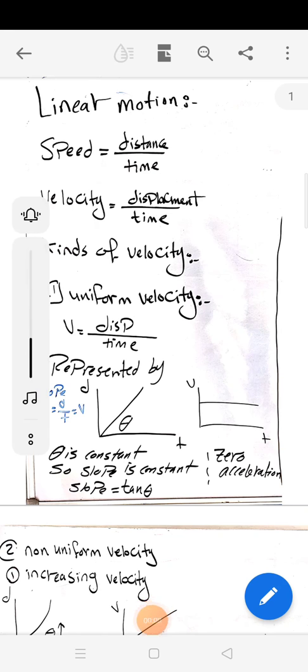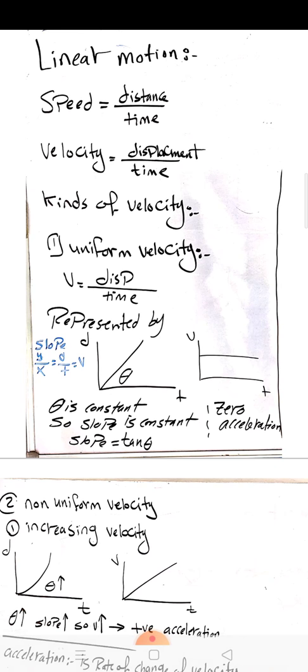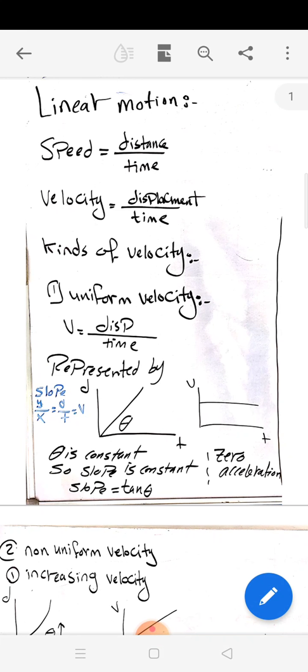Hi everybody. In this second drone, we have discussed linear motion properties. We have to know that speed differs from velocity: speed is a ratio between distance and time, while velocity is displacement over time. Velocity is considered as either uniform velocity or non-uniform velocity.